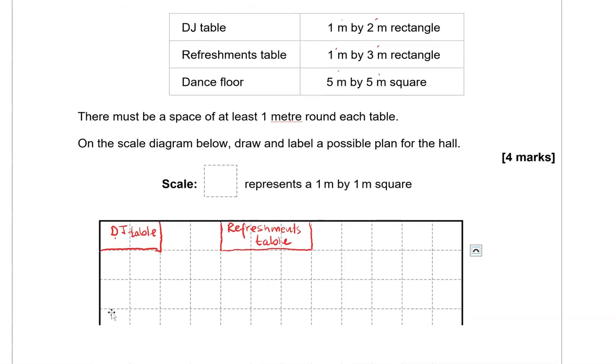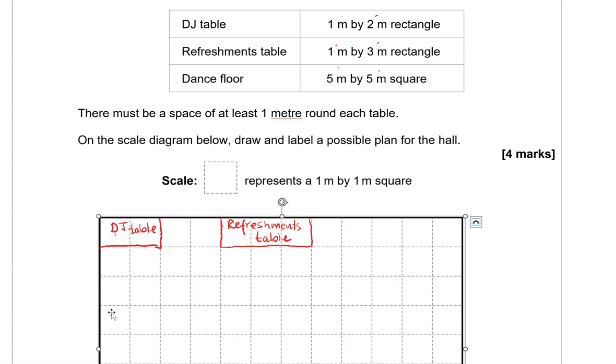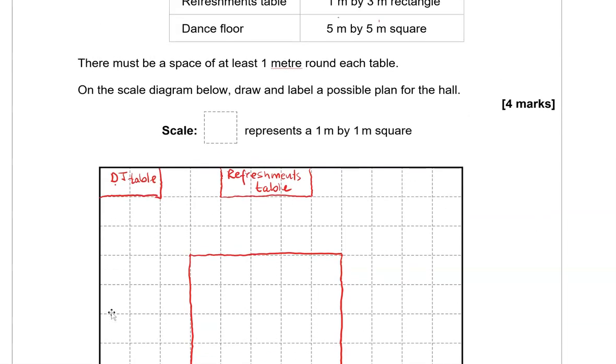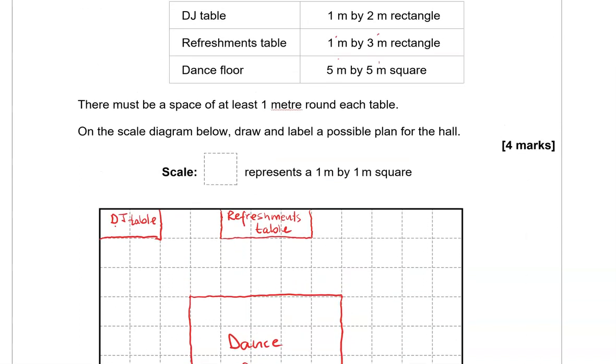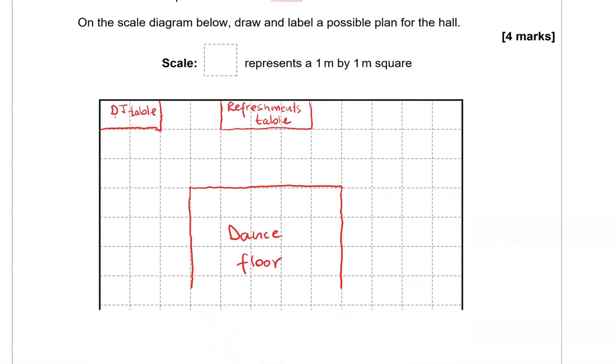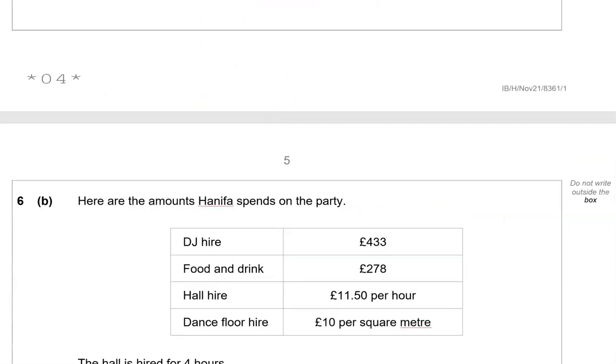We've kept 1 meter around each table. And then we've got the dance floor, which is 5 by 5. And we can do that here. 2, 3, 4, 5. 1, 2, 3, 4, 5. So, we've got the DJ table. Of course, you'd use a ruler when you do this on paper. So, this is the dance floor. And let's just double check. We've got the DJ table one by two meters, refreshments table one by three, dance floor five by five, and we've got one meter around each table and we've labeled all of these so we've completed it correctly.